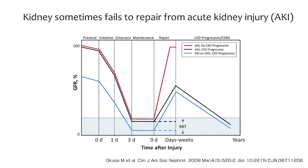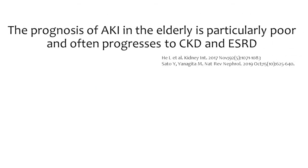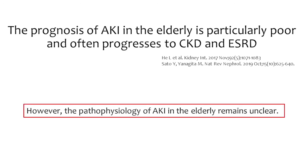Acute kidney injury, AKI in short, is a very common clinical condition characterized by a rapid decline of kidney function, often as a result of an ischemic or toxic insult. Recently, it is widely recognized that a significant proportion of AKI survivors progress to chronic kidney disease or end-stage renal disease. The prognosis of AKI in the elderly is particularly poor and often progresses to CKD and ESRD. However, the reason for this and the pathophysiology of AKI in the elderly remains unclear.